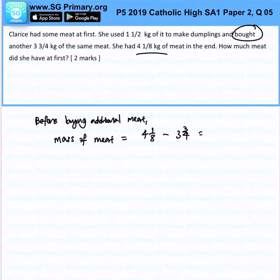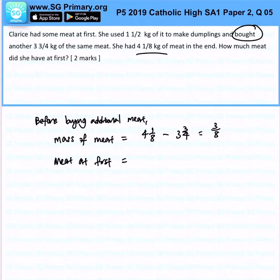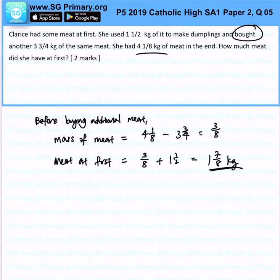That gives us three over eight. Subsequently, the meat at first will be three over eight plus one and a half kg. All in all, that gives us one and seven over eight kg. So that is the amount of meat Clarice had at first — that is the answer.